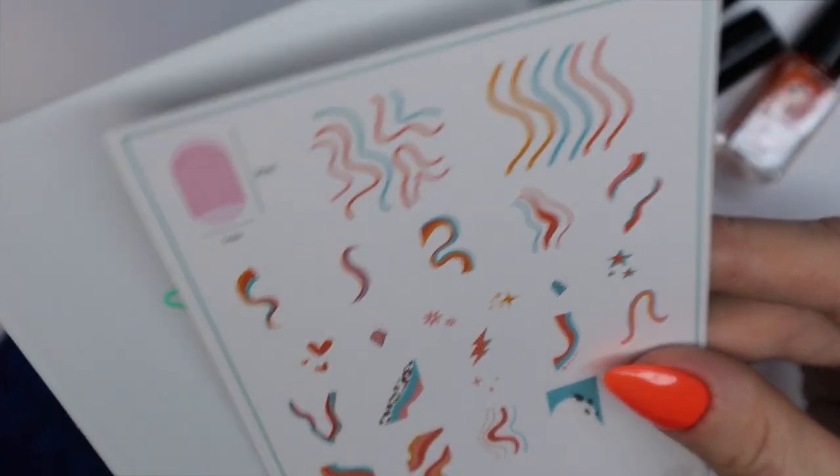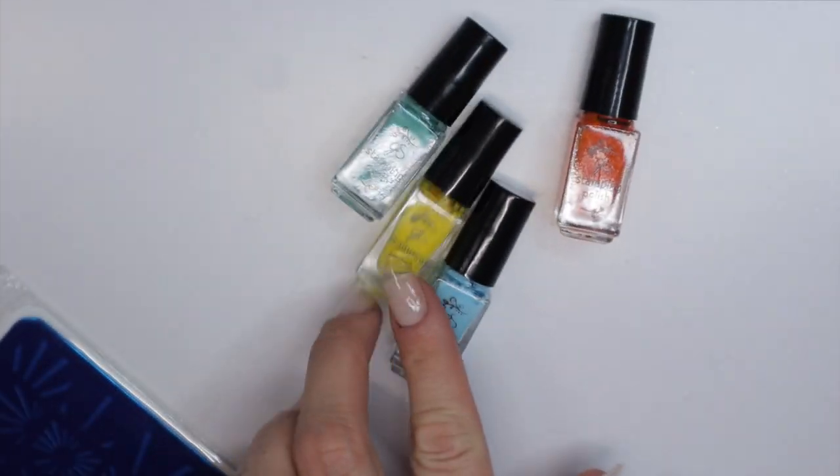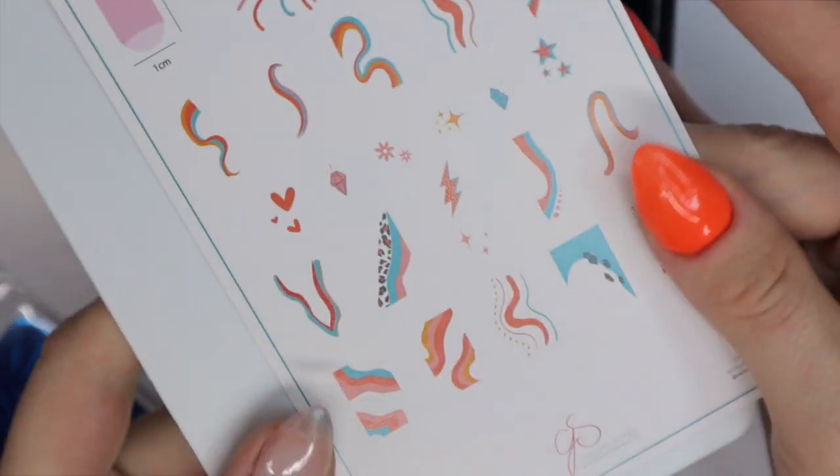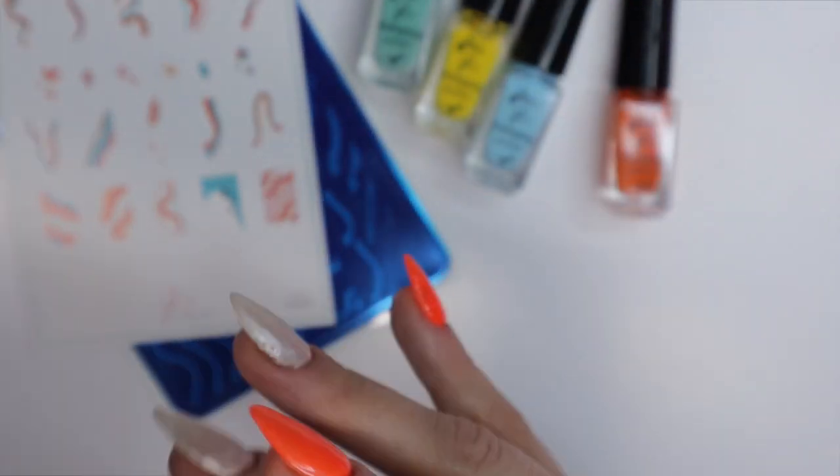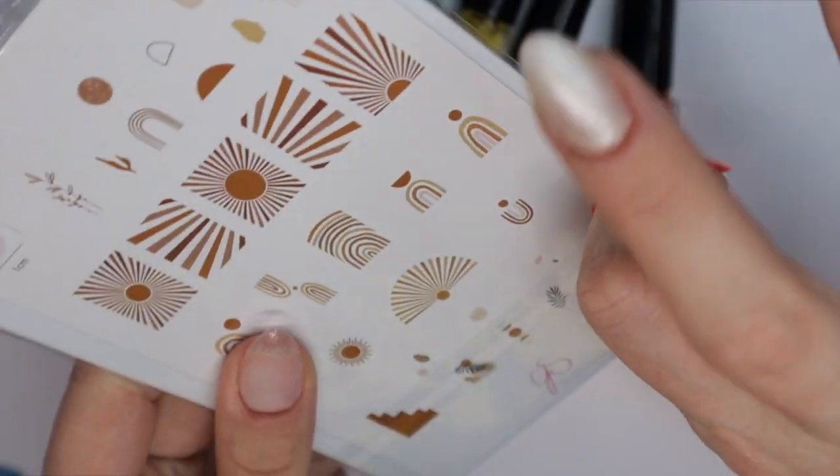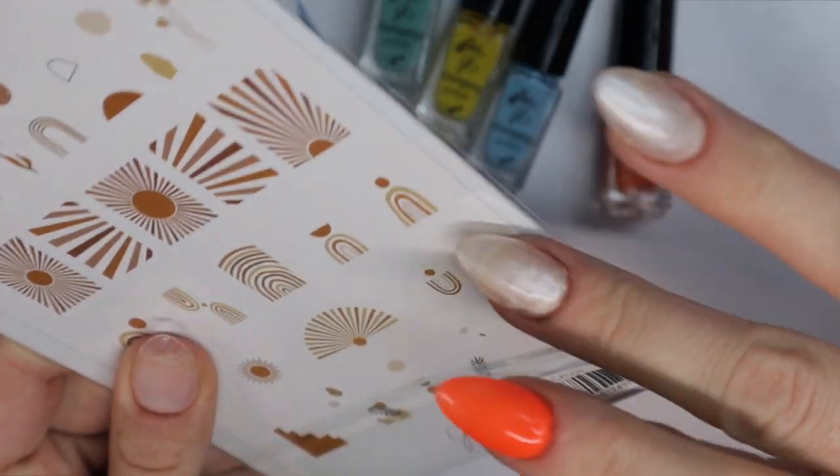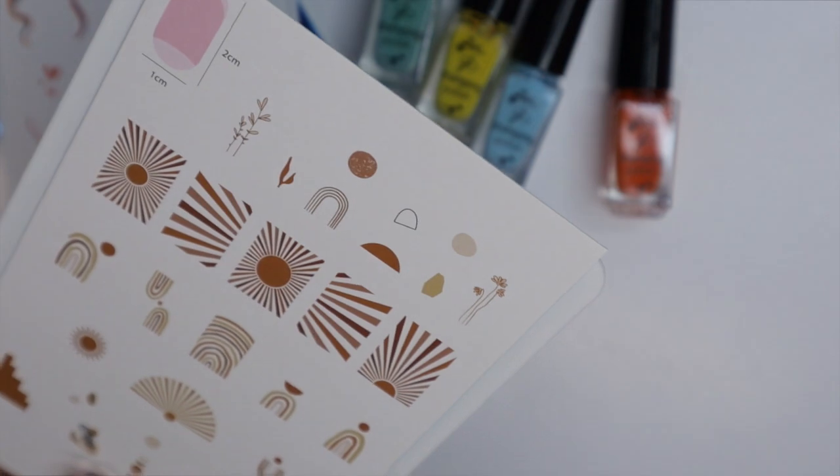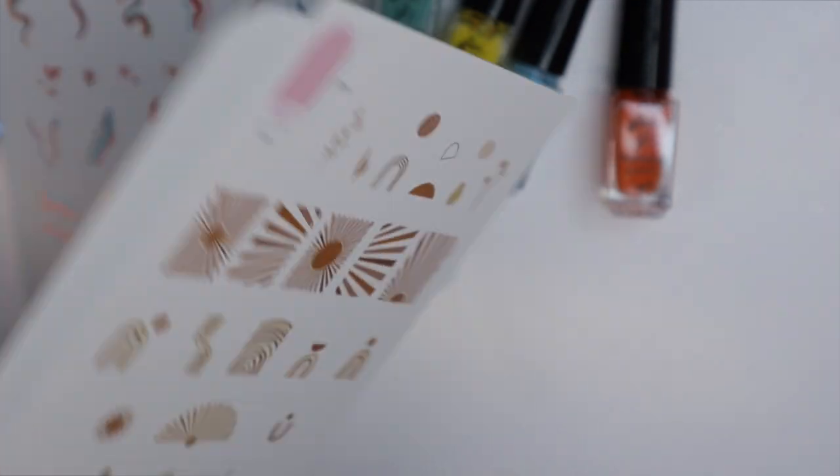If you flip the card around it actually shows you how to do the layering. A lot of the plates that I purchased today, or not today but I received in the mail, are layering plates. That means you have to stamp multiple times to get the designs that you want—it's not just a one and done.